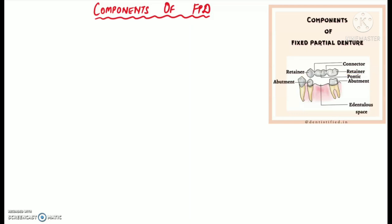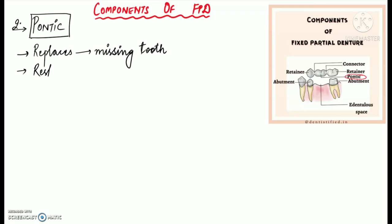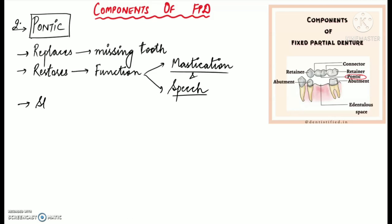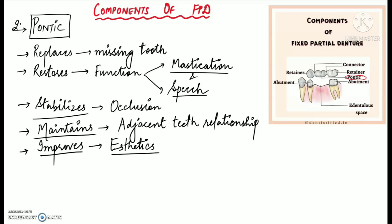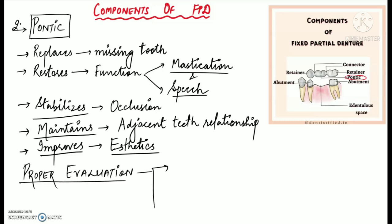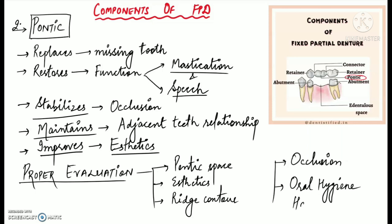Next we'll talk about the pontic. The pontic, or artificial tooth, is the main component of a fixed partial denture that replaces the missing tooth. It restores the function of mastication and speech by filling the space previously occupied by the natural tooth. The pontic is responsible for stabilizing the occlusion and maintaining adjacent teeth relationships, and it also improves aesthetics and satisfies the patient's psychological needs. There are different pontic designs and materials available, which will be discussed in a separate video. Pontic selection should be done after proper evaluation of the pontic space, aesthetics, ridge contour, occlusion, and the oral hygiene habits of the patient.